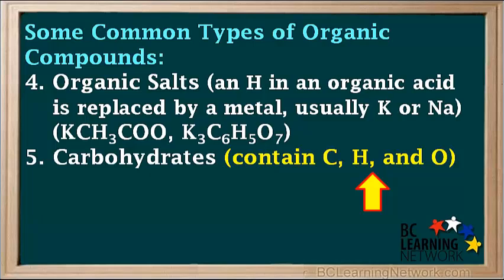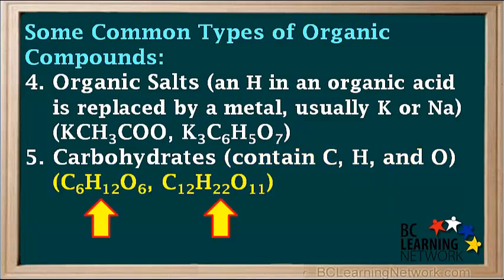A fifth type of organic compound is carbohydrates. Carbohydrates include sugars, starches, and cellulose; they all contain C, H, and O atoms. Two common examples are the sugars glucose C6H12O6 and sucrose C12H22O11.